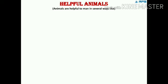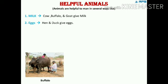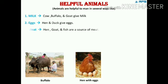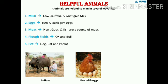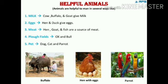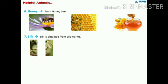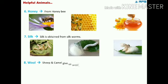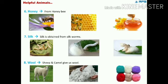Helpful animals — you have already studied in grade 2 how animals are helpful to us. Let's take a quick review: cow, buffalo, and goat give milk; hen and duck give eggs; hen, goat, and fish are a source of meat; ox and bull help us to plough fields; dog, cat, and parrot are kept as pets; honey is obtained from honey bees; silk is obtained from silkworms; and sheep and camel give us wool.